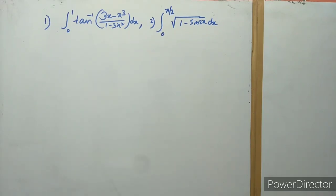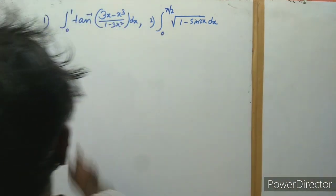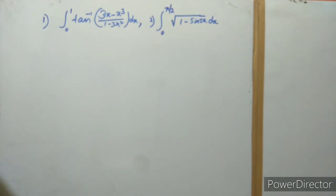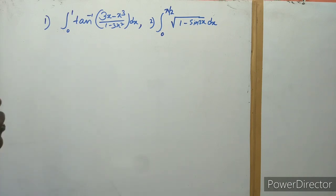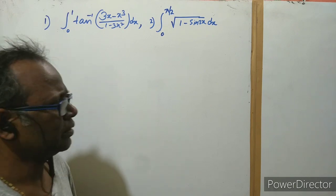Welcome to my channel everybody. This is a very interesting integral. In my previous video there was a discussion about limits 0 to 1, given the expression tan⁻¹((3x - x³)/(1 - 3x²)). In my previous video the limit was 0 to √3, and it involved 2x/(1 - x²).